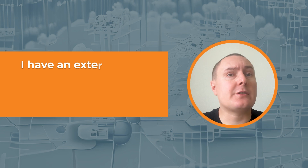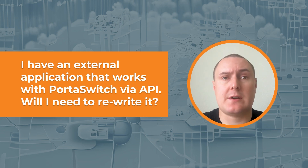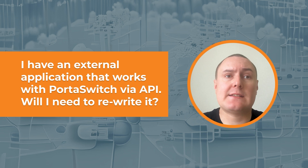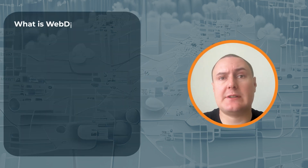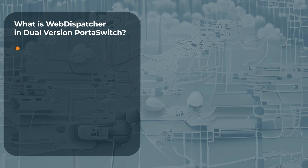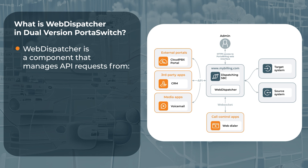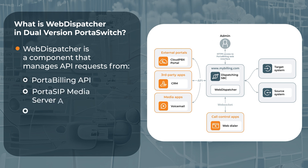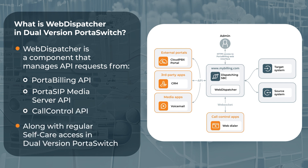I have an external application that works with portal switch through API. Will I need to rewrite it? Let's break this question down into a few smaller questions so that I can explain it fully. First, what is web dispatcher in DualVersion portal switch? DualVersion portal switch requires two separate systems, the source and the target. This means that the API server has to know where to execute the API request. For this purpose, portal switch introduces web dispatcher, the component that handles the switching between two systems, the source and the target.